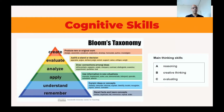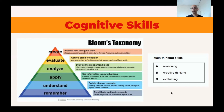Reasoning probably relates to analyzing and applying, because those two tasks require reasoning. Creative thinking probably relates to creating something, which is also a key component of Bloom's Taxonomy. And evaluating has a direct correspondent in Bloom's Taxonomy: evaluate. This is something we need to know from the start so that we follow the right path when answering the question.